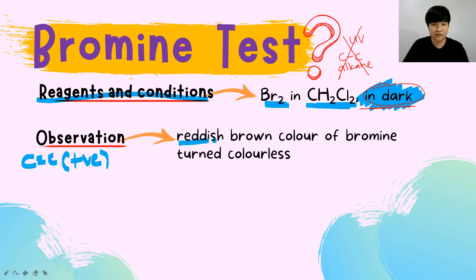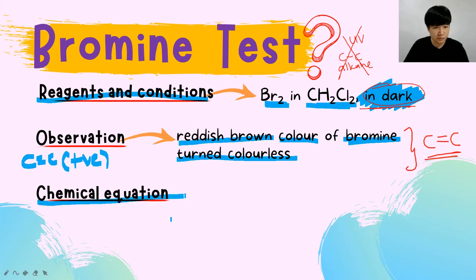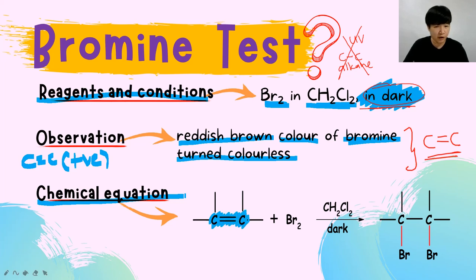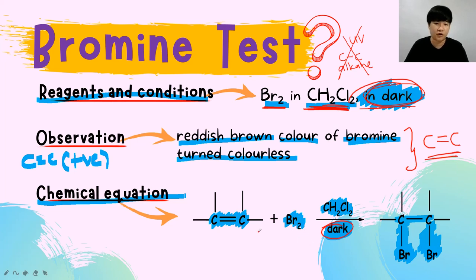The positive observation for bromine test applies to carbon-carbon double bond: the reddish-brown color of bromine will turn colorless. For the chemical equation, Br₂ is added to the carbon-carbon double bond under inert solvent in the dark — the double bond becomes a single bond and Br Br is added to the carbons. Carbon-carbon single bond gives no reaction. The condition must always be in the dark.